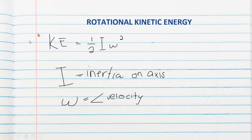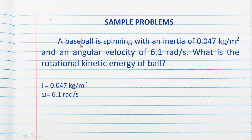As for rotational kinetic energy, we have a different type of formula. Instead of mass, we have the inertia of the spinning object, and instead of velocity, we have the angular velocity, or omega. For the problem: a baseball is spinning with an inertia of 0.047 kilogram meter squared and an angular velocity of 6.1 radians per second. What is the rotational kinetic energy of the ball?